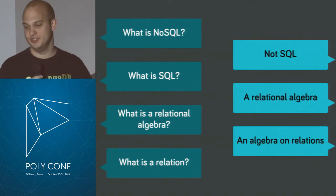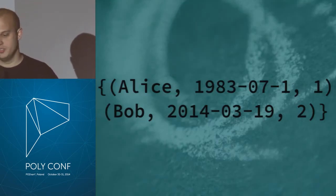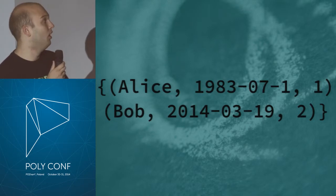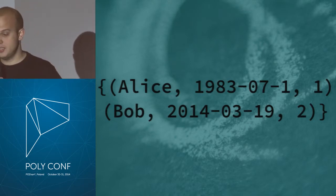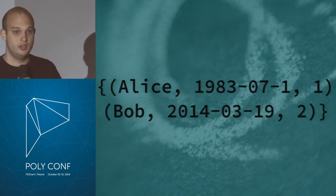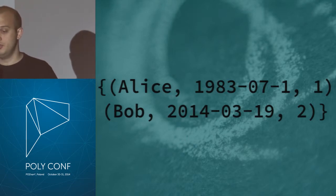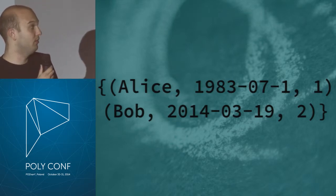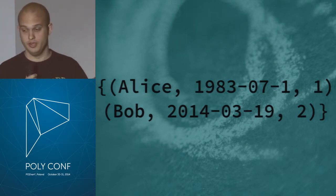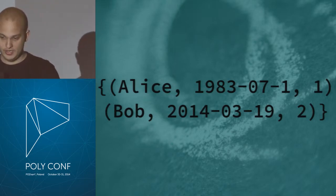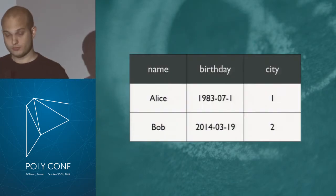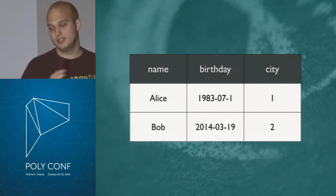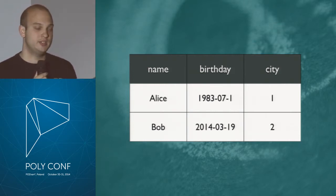What are relations? A relation is made of tuples — bubbles of data. We have three tuples: the first has Alice, then some numbers with dashes, then a number. This doesn't help us understand what those tuples mean, so smart people came up with displaying them as a table. That's the way SQL database interfaces show it to you — a table with titles for each column, so now we know, for example, that one column is a birthday.